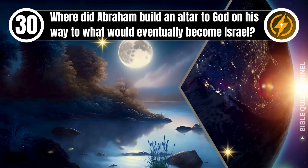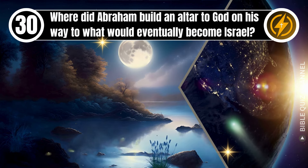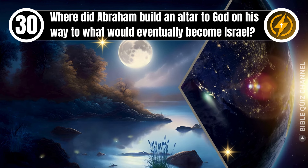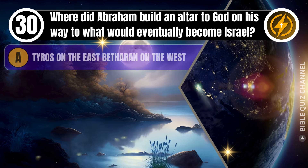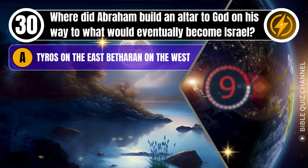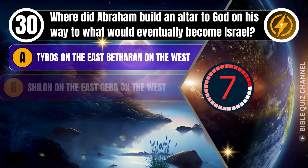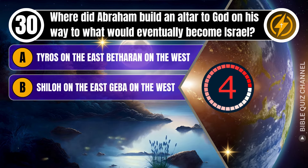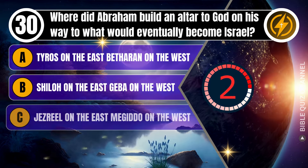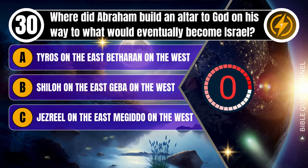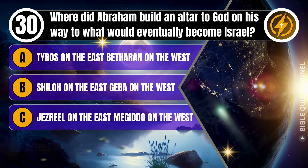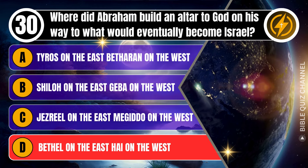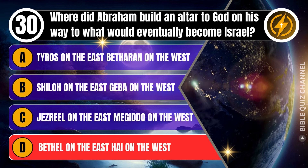Question 30. Where did Abraham build an altar to God on his way to what would eventually become Israel? A. Tyros on the east, Betharin on the west. B. Shiloh on the east, Geba on the west. C. Jezreel on the east, Megiddo on the west. D. Bethel on the east, Hai on the west. You get 10 seconds.